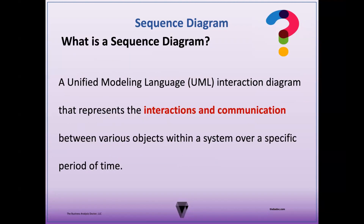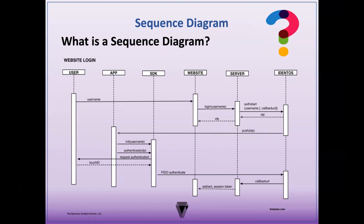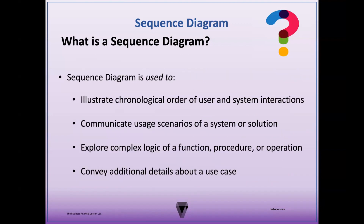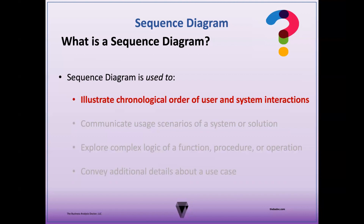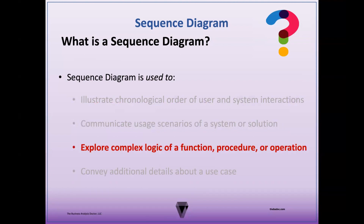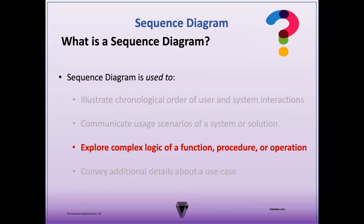So what's a sequence diagram? A sequence diagram is a Unified Modeling Language, or UML, interaction diagram that represents the interactions and communication between the various objects within a system over a specific period of time. Sequence diagrams illustrate the flow of messages between entities, showing the order in which these interactions occur. A sequence diagram is used to illustrate the chronological order of users and system interactions, to communicate usage scenarios of a system or solution, to explore complex logic of a function, procedure, or operation, or to convey additional details about a use case.